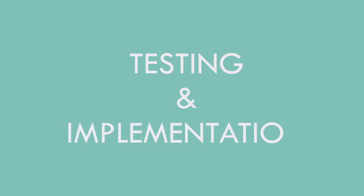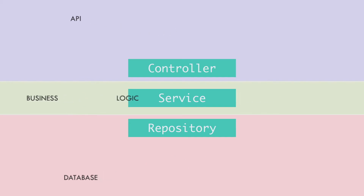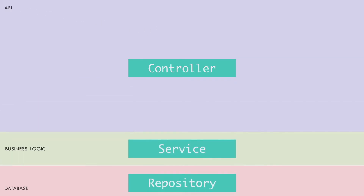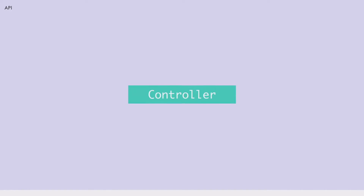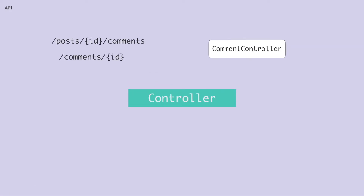Let's move on to testing and implementation. I would like to refer back to this high-level architecture of the project before I start. I'm going to start with the API, which is the controller layer. Here we need a resource controller class to handle the incoming HTTP requests, which I would call CommentController. So let's start with that.